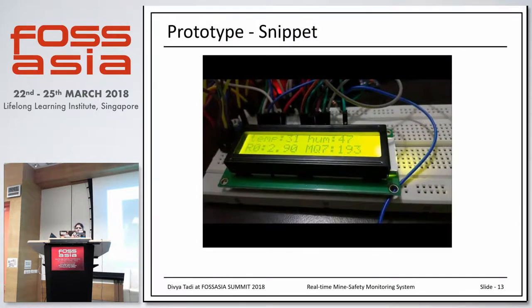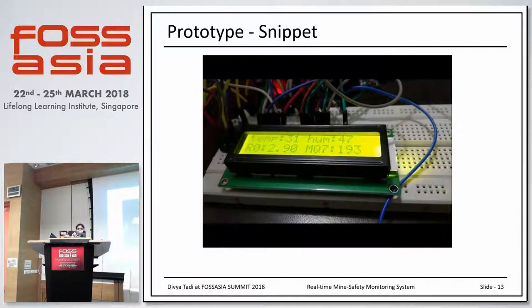This is the prototype snippet. It is hard to test the methane and carbon monoxide values in a home environment — I have set this up at home. In order to show the working prototype, what I have done is reduce the threshold values.